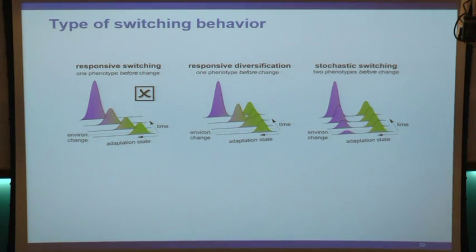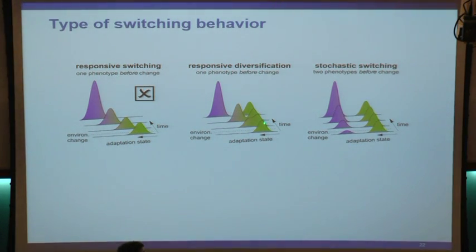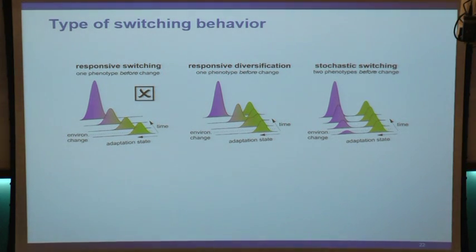But with the 13C experiment, we can exclude the stochastic switching scenario as well. What we think is happening is best described as responsive diversification: there is one unimodal but heterogeneous population present, where only some cells would be able to make the transition to the new environment, while other cells from this population remain non-growing in the next environment. This model best describes what we see.